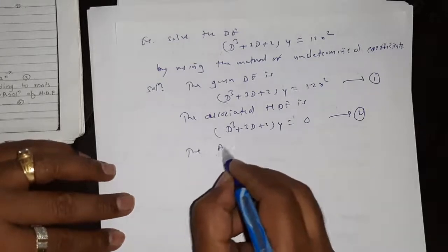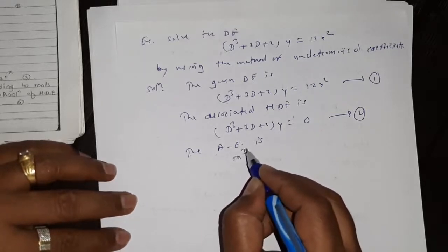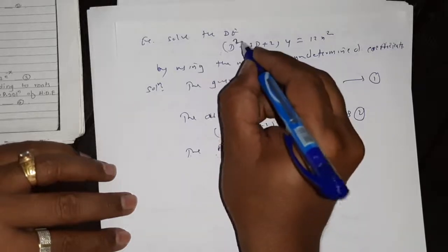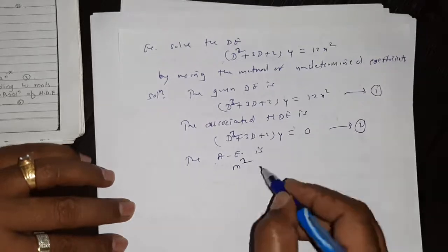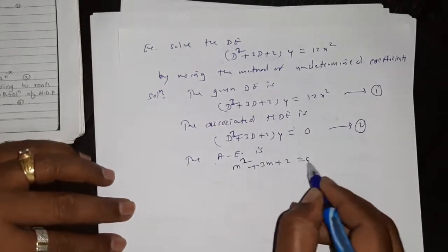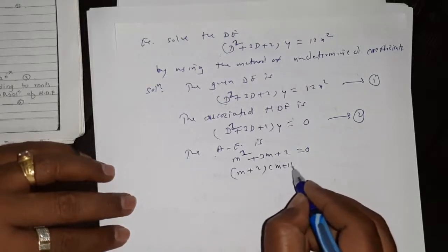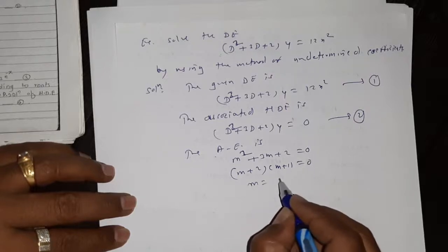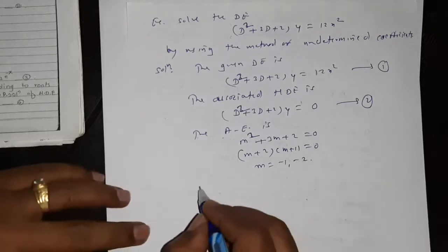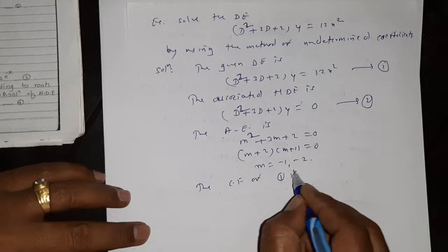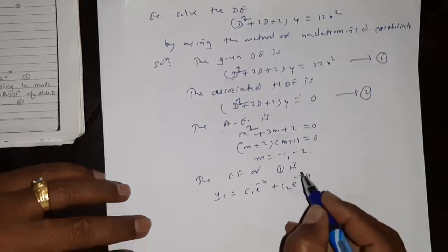The auxiliary equation is m² + 3m + 2 equal to 0. Factoring: (m+2)(m+1) equal to 0, therefore m is minus 1 and minus 2. The complementary function of equation 1 is yc equal to c1·e^(−x) + c2·e^(−2x).